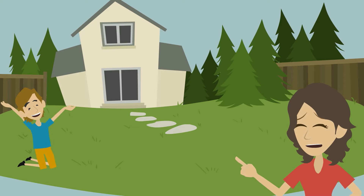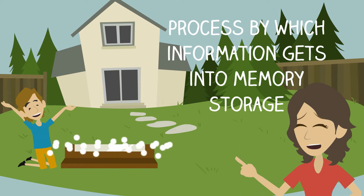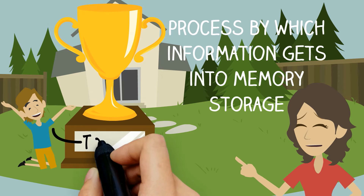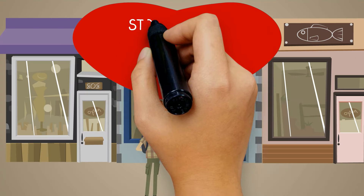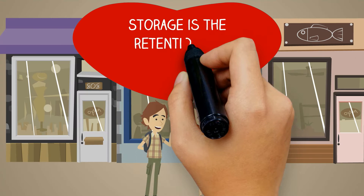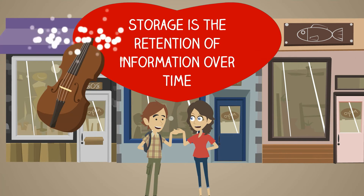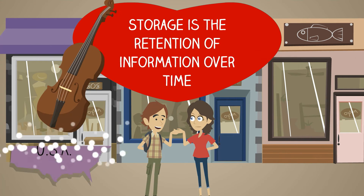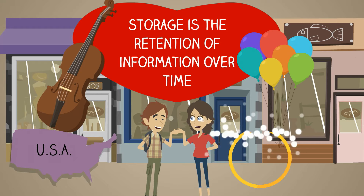First, encoding is the process by which information gets into the memory storage, like how you always remember weird-looking faces. Secondly, storage is the retention of information over time and how this information is represented in memory.